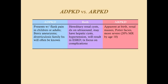Comparing autosomal dominant versus autosomal recessive polycystic kidney disease: you'll know the difference based on when they present. What both have in common is that they're hereditary renal cysts, both diagnosable on ultrasound, both can give rise to hepatic cysts and hypertension due to activation of the renin-angiotensin-aldosterone system, both ultimately result in end-stage renal disease, and treatment is focused on managing complications since we can't treat the disease itself.